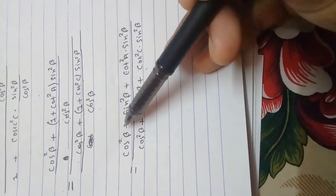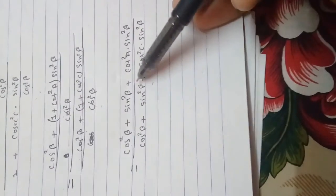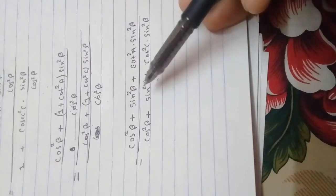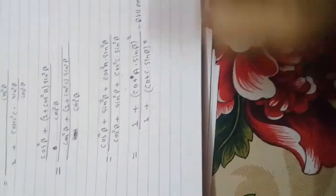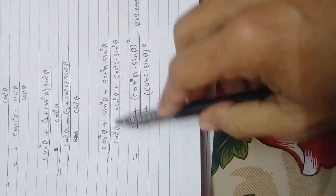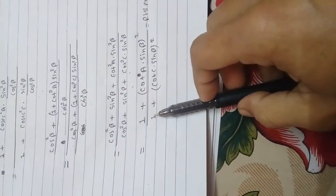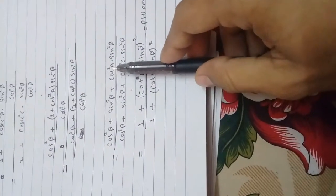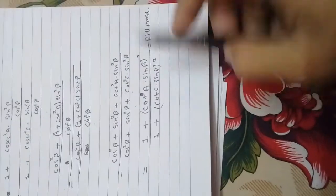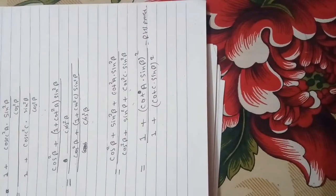Now cos² β plus sin² β equals 1, and cos² β plus sin² β equals 1, so these expressions each convert to 1. Taking the two results in a common bracket, the RHS is proved.